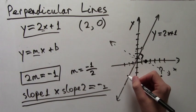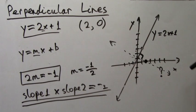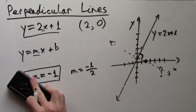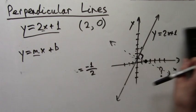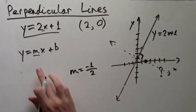So we already know something about our line. So we can replace the m in the formula with negative 1 half.